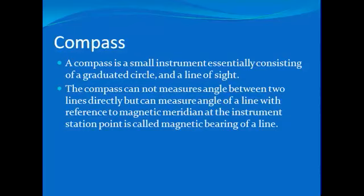The compass cannot measure the angle between two lines directly. If it is desired to find out the angle between two lines, first their angles with the magnetic meridian are determined separately, and then the difference between the two values is found, which is equal to the angle between the two lines.